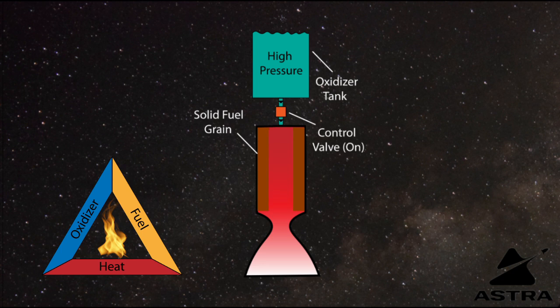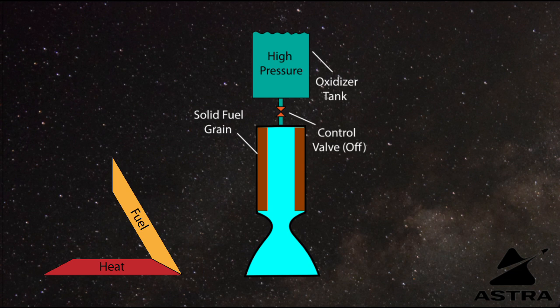Similar to liquid rockets, hybrid rockets are able to be stopped and started. Because of the fact that the oxidizer is in a liquid state, you can simply stop the flow of oxidizer into the combustion chamber. Remember that we only need to remove one element of the combustion triangle in order to stop the hybrid reaction.